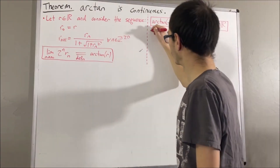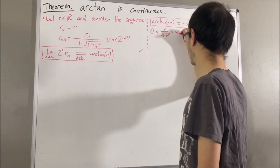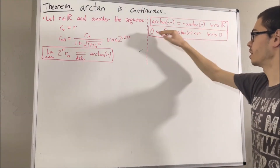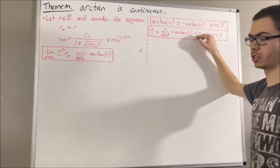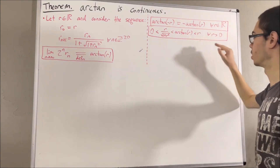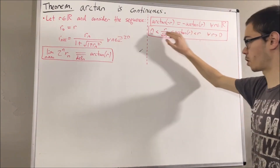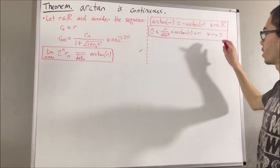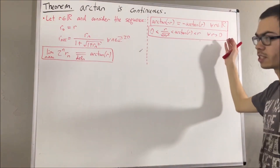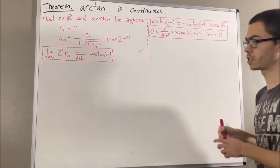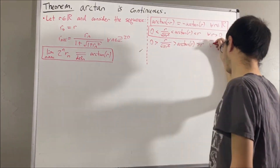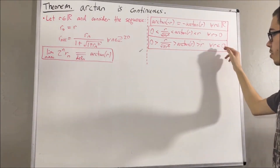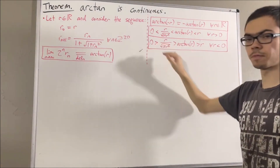We also have that for all R greater than 0, these inequalities hold. In particular, if R is greater than 0, then arctangent of R is greater than 0. And if R is less than 0, then the inequalities just get reversed — in particular, arctangent of R is less than 0.